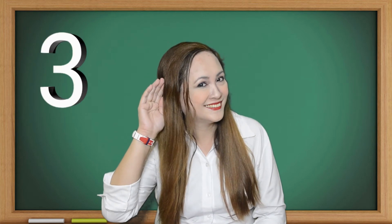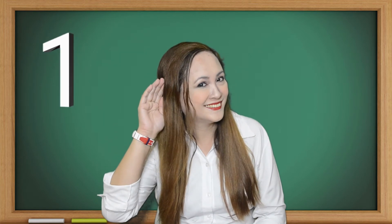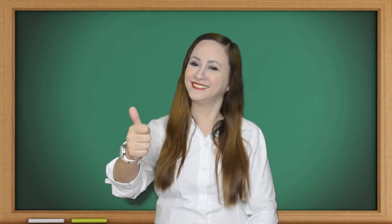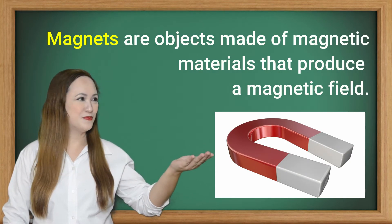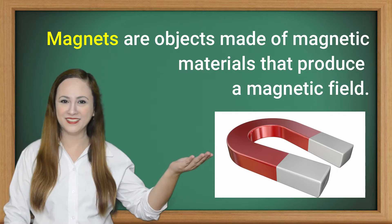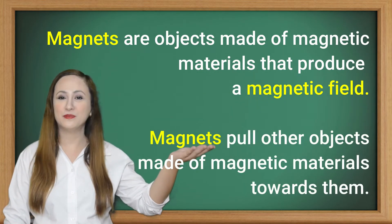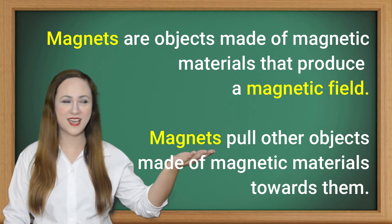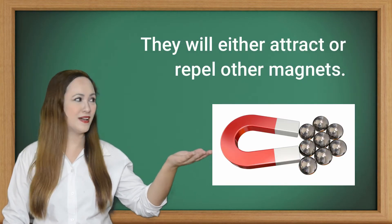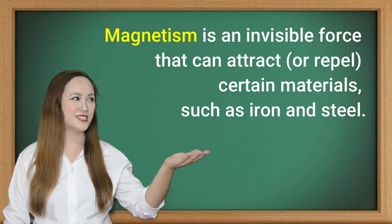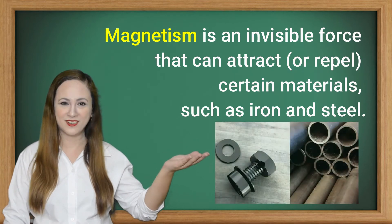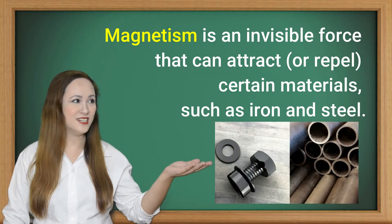What is a magnet? Magnets are objects made of magnetic materials that produce a magnetic field. Magnets pull other objects made of magnetic materials towards them. They will either attract or repel other magnets. Magnetism is an invisible force that can attract or repel certain materials such as iron and steel.